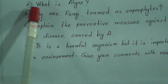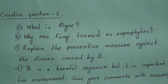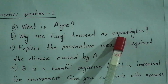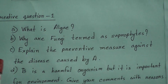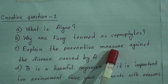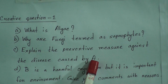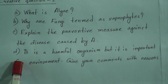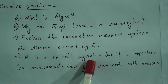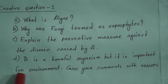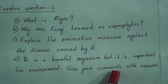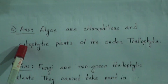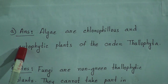The questions are: A number — what is algae? B number — why are fungi termed as saprophytes? C number — explain the preventive measures against the disease caused by figure A. D number — B is a harmful organism but it is important for the environment; give your comments with reasons. Now, A number answer. A number question was: what is algae?